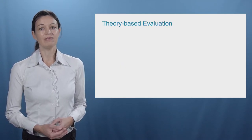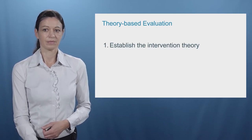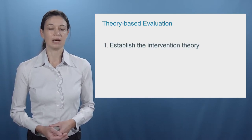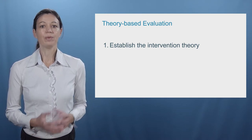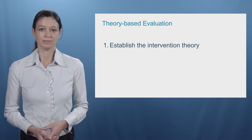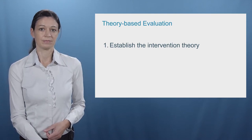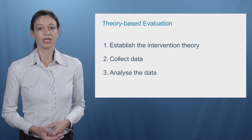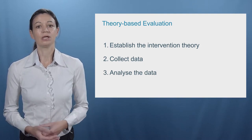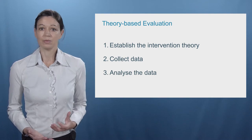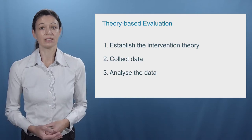One strand of policy evaluation is called theory-based evaluation, and it unfolds in three steps. First, the researcher needs to establish a so-called intervention theory — a theoretical assumption of how the policy could have triggered the impact. This can be a set of hypotheses or the detailed description of a causal mechanism. Once we have established detailed assumptions of how exactly a certain policy leads to a certain impact, we need to collect and then analyze the data to investigate whether our intervention theory actually unfolded, or whether something else caused the observed impact.